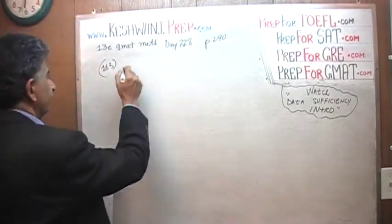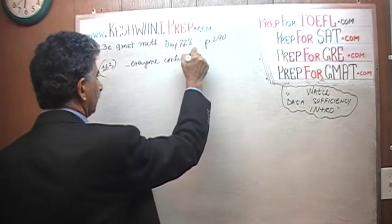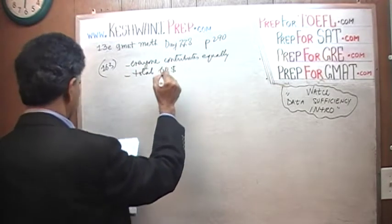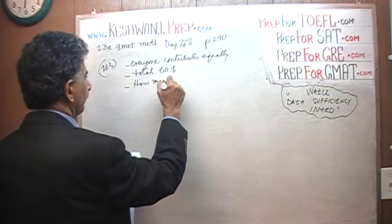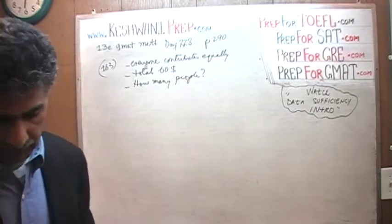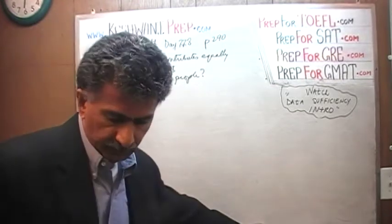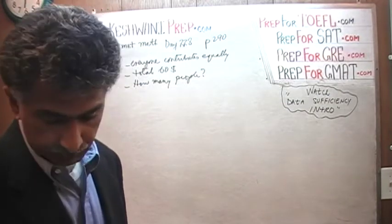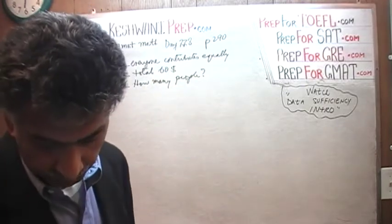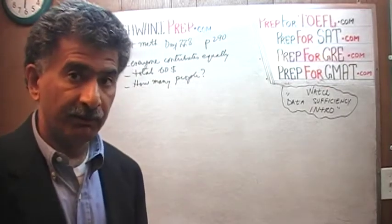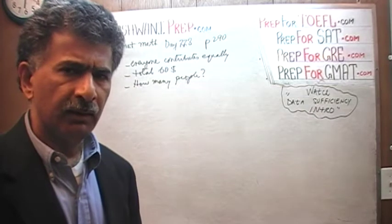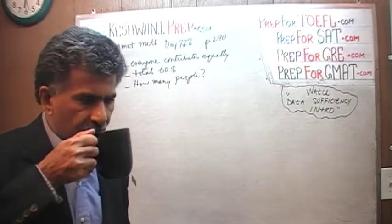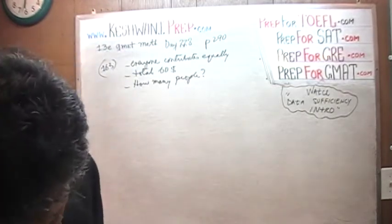It says everyone contributes equally. The total amount of money that was raised was $60. The question simply is, how many people? Let's read the question properly the way it appears in the book. It says, every member of a certain club volunteers to contribute equally to purchase a $60 gift certificate. So there you go, $60 prize and everybody contributes equally. The question simply is, how many members are there in the club? If we are told that every member in the club contributes, and every member contributes equally, nobody gives anything more than the other person, and by the same token, nobody gives less.